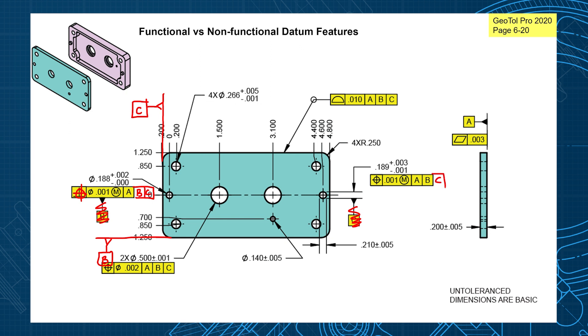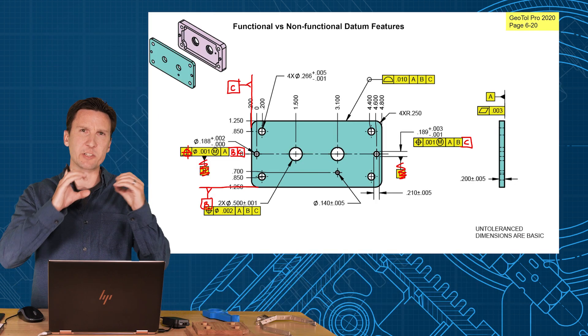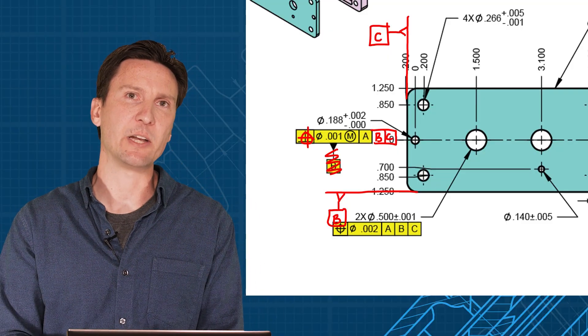Then we'll do the same thing on the slot. This has to be positioned relative to A, B, and C. This causes that unnecessary stack-up and makes our assembly perform a little bit worse.